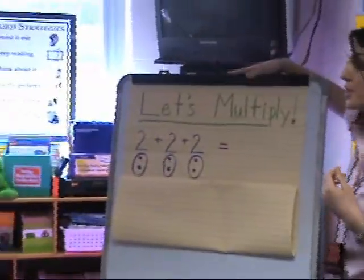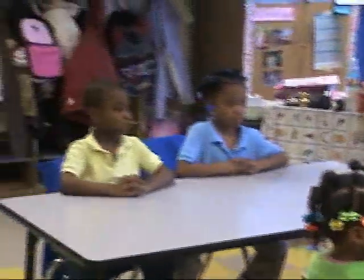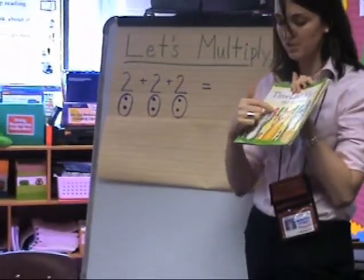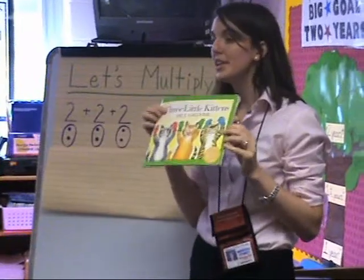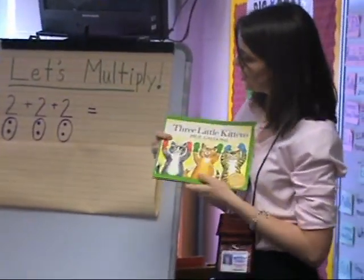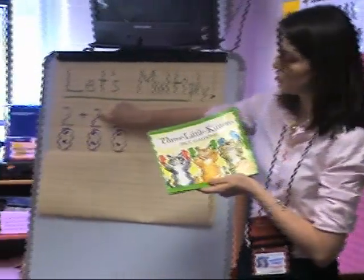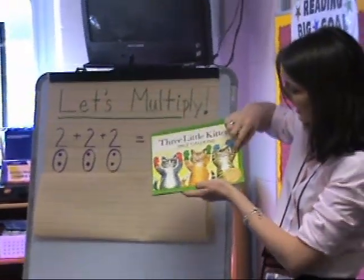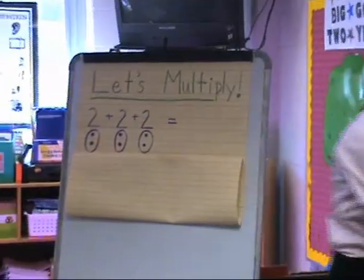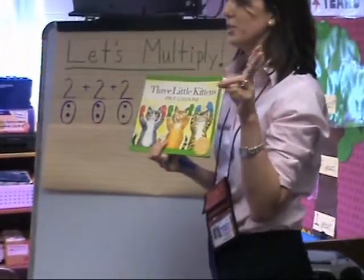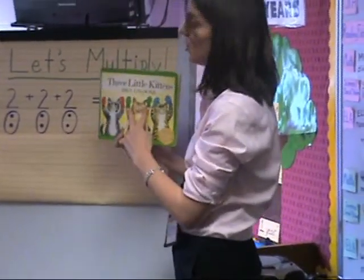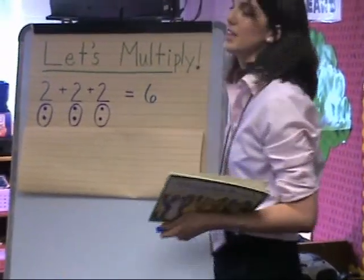Let's look at a word problem using some of your names. Remember the story about three little kittens we read earlier today? We saw three cats, and each of these cats had two mittens. So we take each of the mittens and put them on our chart — two for the black cat, two for the orange cat, and two for the yellow cat. We skip count together starting from zero: two, four, six. So the answer is six.